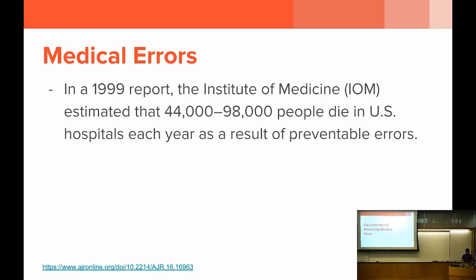In 1999, a report by the Institute of Medicine estimated 44,000 to 98,000 people die in US hospitals as a result of preventable errors. Audience question: What was the general reception from doctors and the medical community regarding the ECG results? Were they surprised? The response: doctors have generally felt that automated ECG interpretations are just not accurate enough — good for some things, but needing manual review. This study and a few others, particularly focused on atrial fibrillation, gave more of a sense that this could now be done automatically.